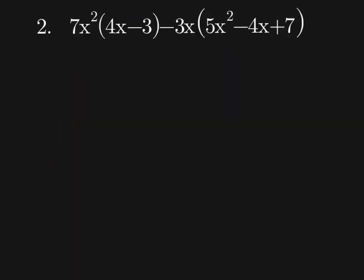All right, next one. This one's a little longer, so I have two sets of parentheses, so I'm going to go ahead and distribute. So I have 7x squared times 4x, so 7 times 4 is 28.